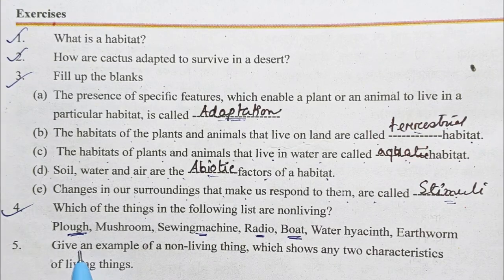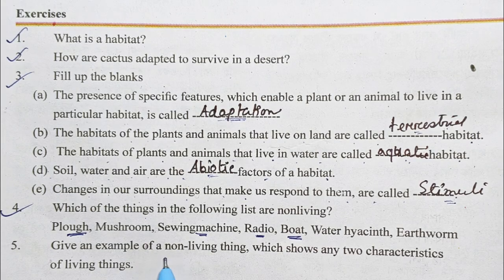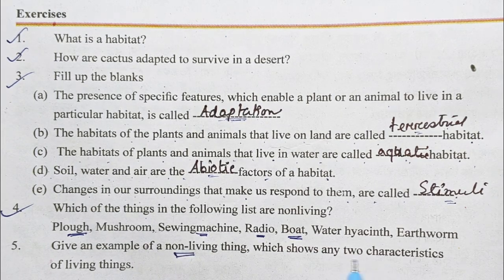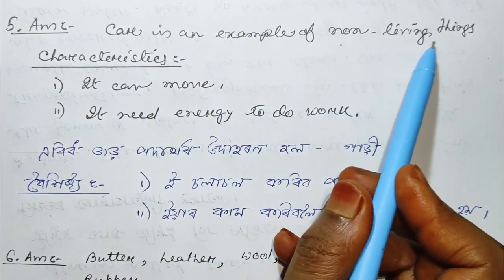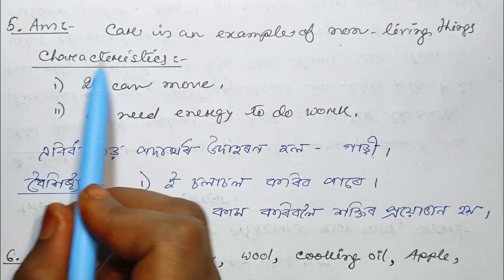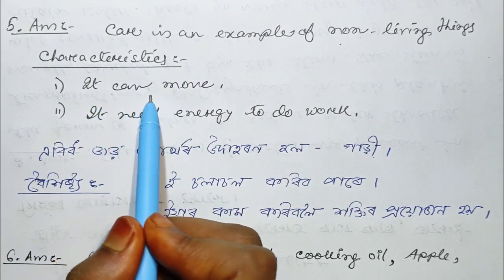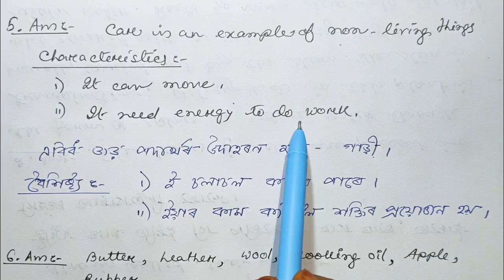Question 5. Give an example of a non-living thing which shows any two characteristics of living things. A car is an example of a non-living thing. It can move, and it needs energy to do work.